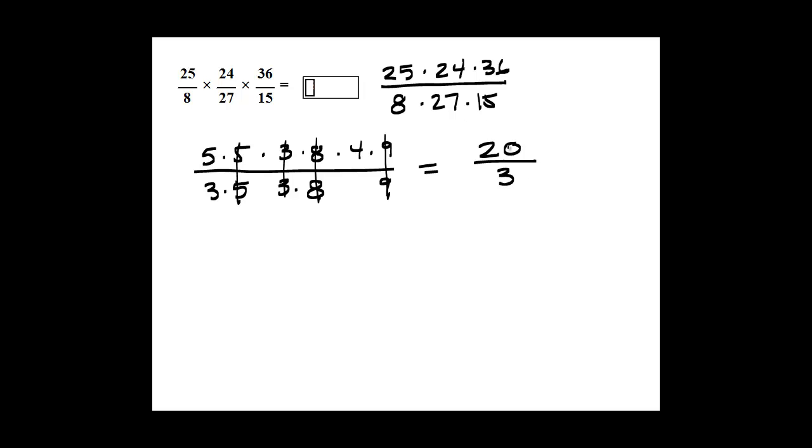Because 3 is not a factor of 20, we know this is reduced to its lowest terms. It's an improper fraction. We could leave it as such, or we could take 20 and divide it by 3.